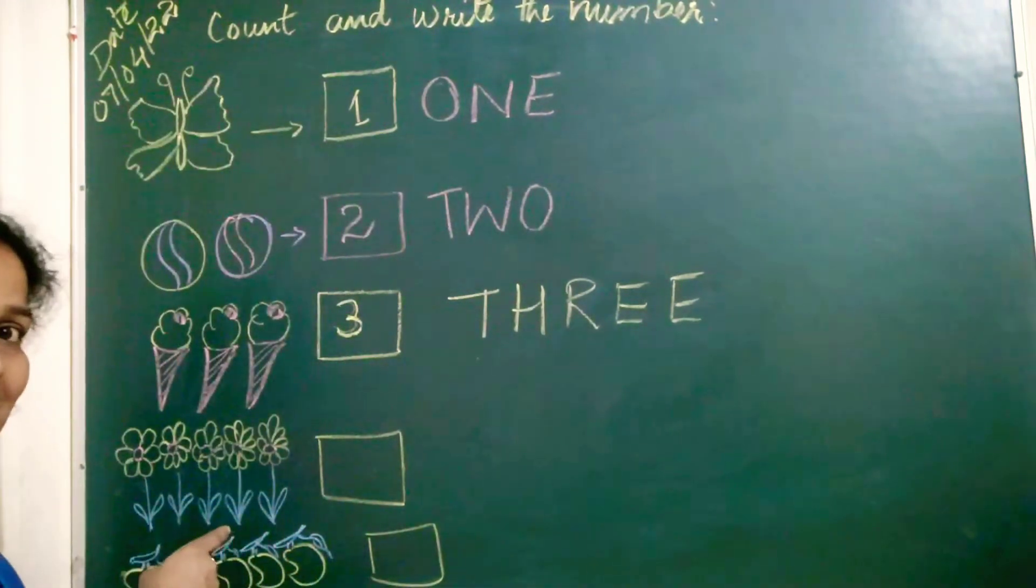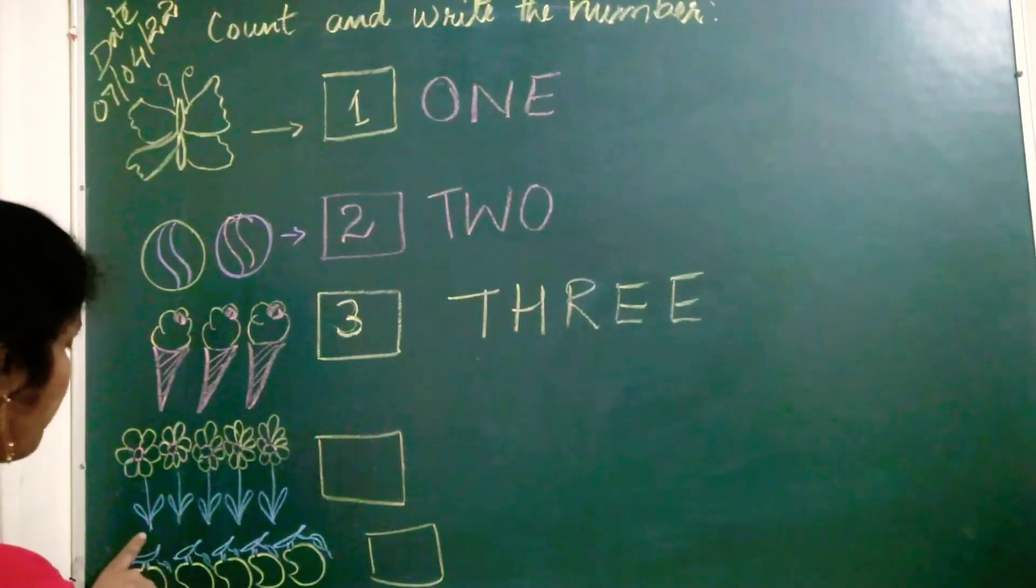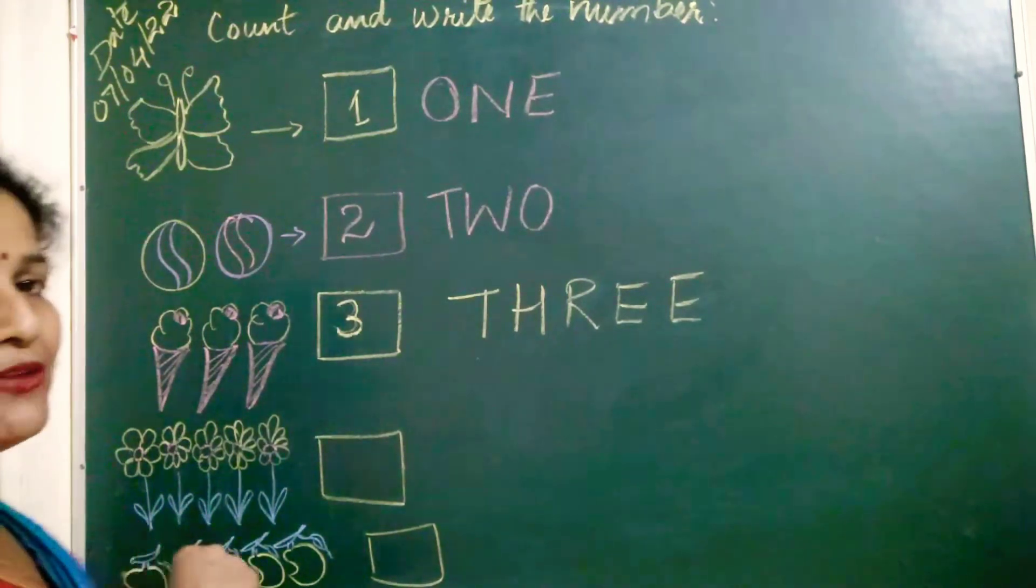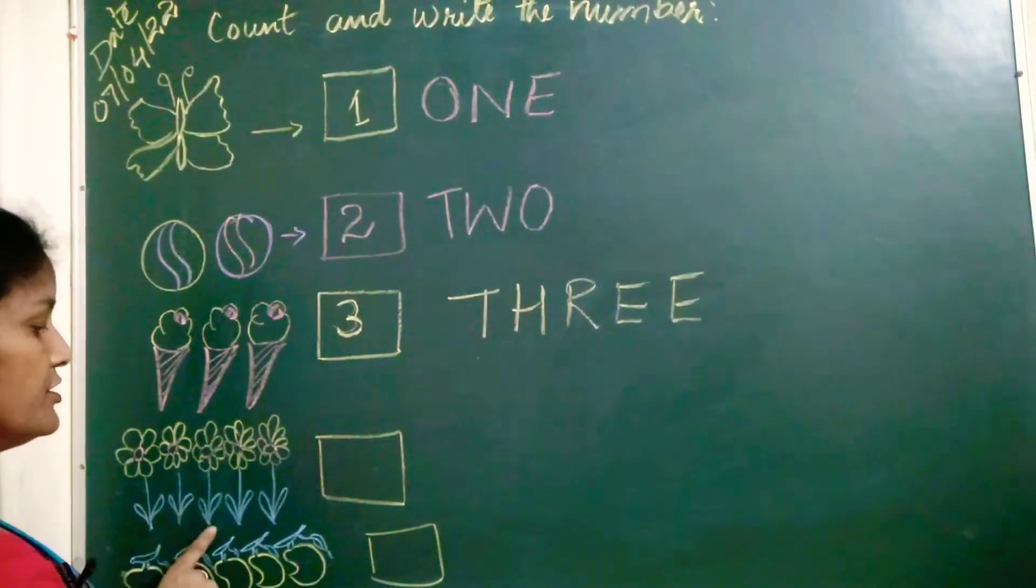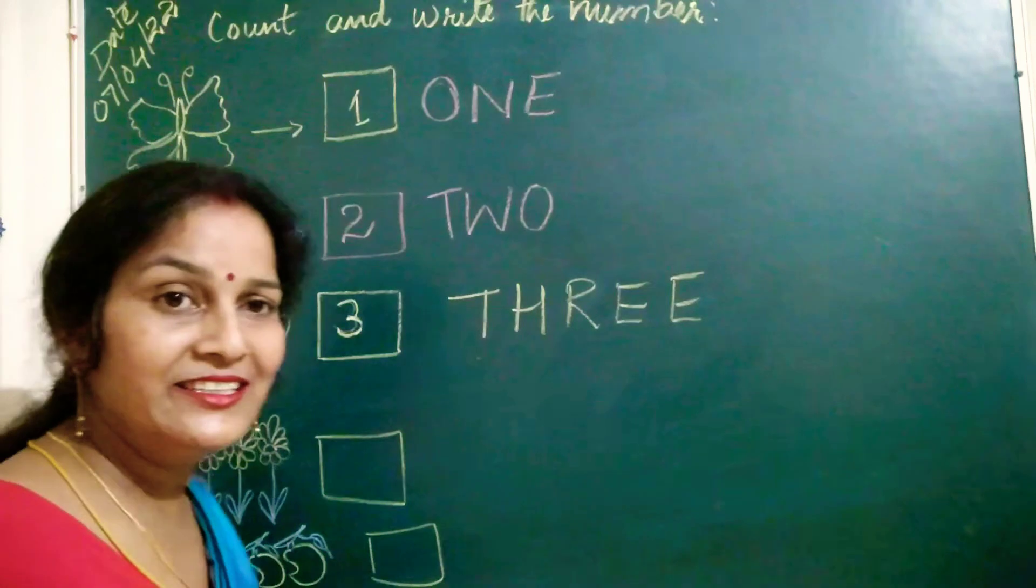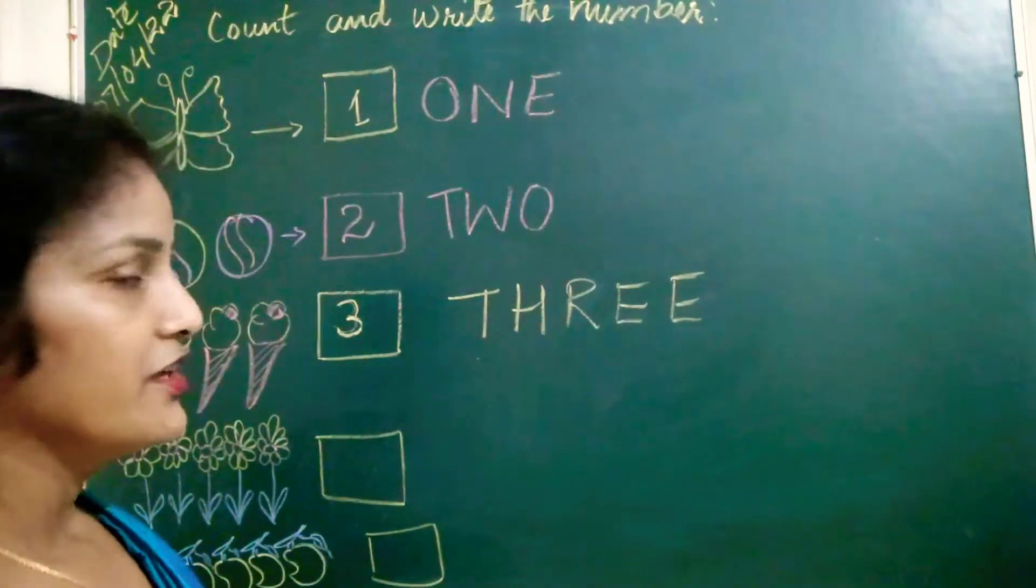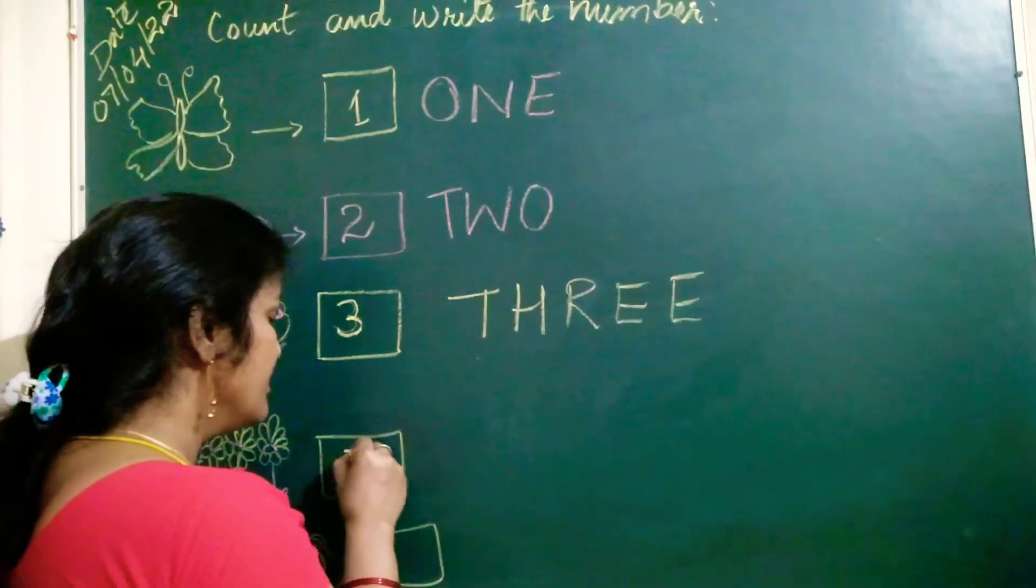Now what is this? This is flower. So how many flowers are here? One. Two. Three. Four. And five. Five. So here.